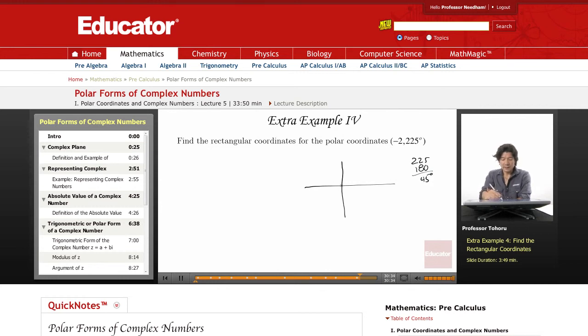So we know it's going to end up down here. The reference angle is 45 degrees. However, it's negative 2, so it's going to be out here in the opposite direction. So this is actually where the point negative 2, 225 ends up. Weird, right?